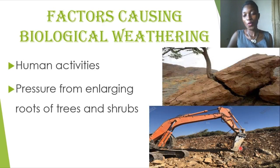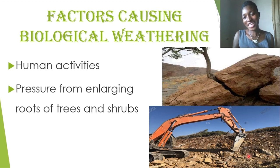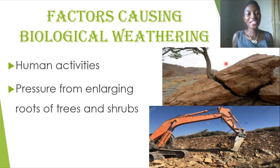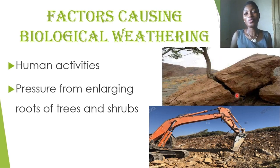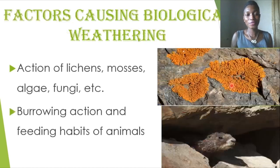Human activities are one factor — a hydro hammer being used to break down a rock shows how continuous pressure causes the rock to break apart. Also, pressure from enlarging roots of trees and shrubs: as plants grow, whatever is in their way becomes an obstacle. If the plant is able to overcome that obstacle — such as a rock — it can penetrate through the rock and cause breakage, which is biological weathering.